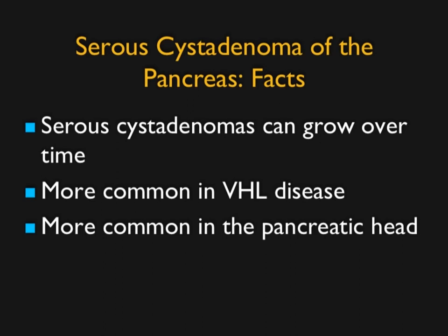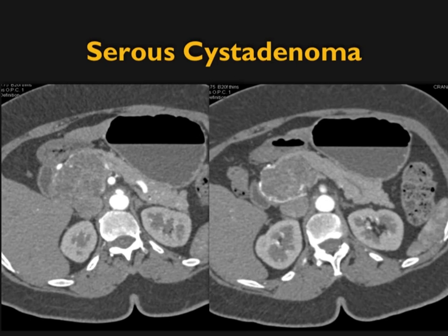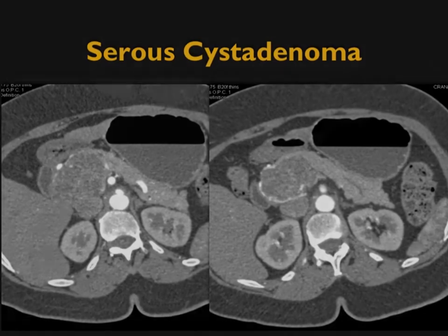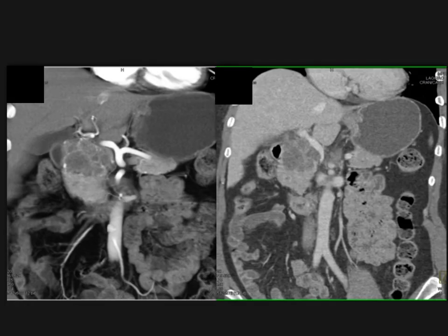One thing about serous cystadenoma is they can grow with time. They're more common in patients with von Hippel-Lindau disease and more common in the pancreatic head. For a great example: large cystic lesions with septations and no real glandular obstruction. For a solid example, look at the vessel — look at the GDA, how it's displaced but not invaded. You can see the Swiss cheese appearance with multiple cystic lesions within the lesion. These come very close to the celiac and hepatic artery, portal vein and SMV, with mass effect, but there's no invasion — a helpful sign.